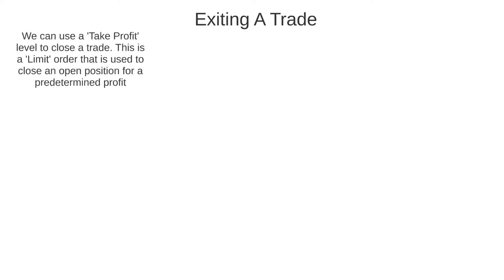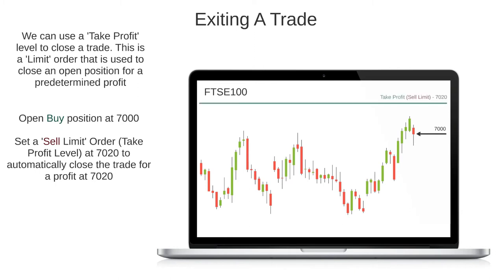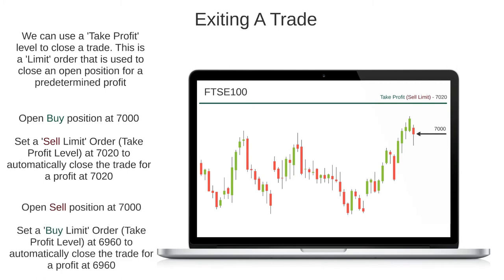Another way to close a trade is by using what's known as a take profit level. This is simply a limit order that is used to close an existing position once it has reached a predefined profit target. For example, if I entered a buy position on the FTSE 100 at 7,000 with a view of the price reaching 7,020, I could set a limit order — a take profit level — to automatically close the trade once the price reaches 7,020 for a profit. The same can be done for sell positions, so if I entered a sell position at 7,000 and was targeting 6,960, I could set the take profit order at 6,960 to automatically close my trade when the price falls there.